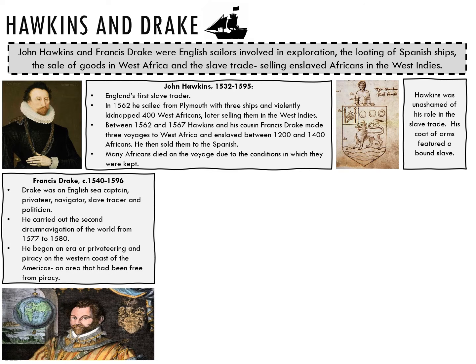Francis Drake was an English sea captain, a privateer, a navigator, a slave trader and a politician. He carried out the second circumnavigation of the world from 1577 to 1580, and he began an era of privateering and piracy on the western coast of the Americas, an area that had previously been free of piracy.